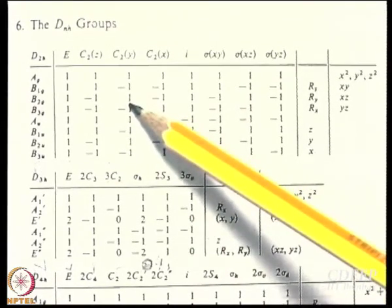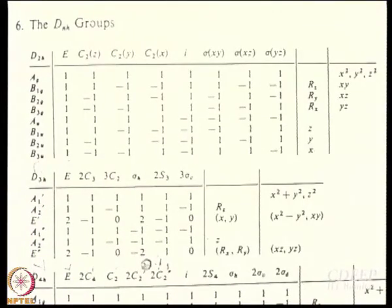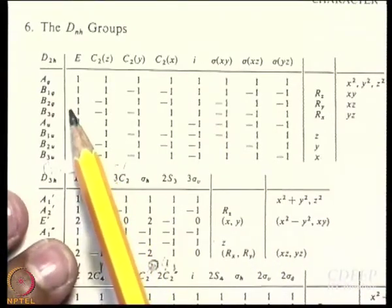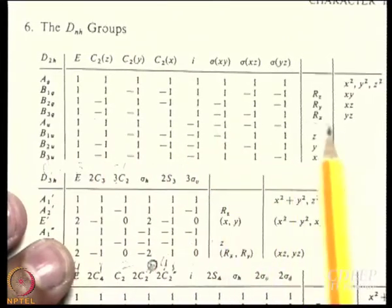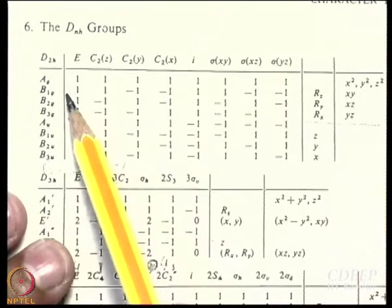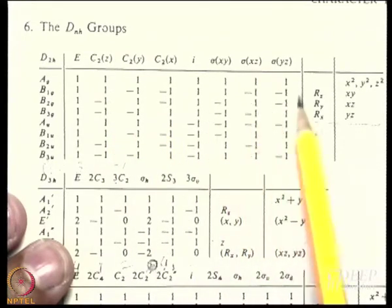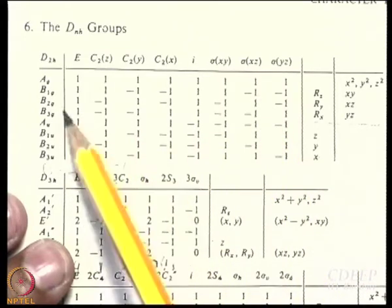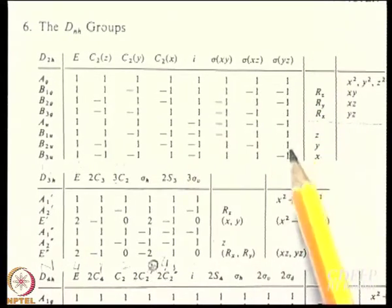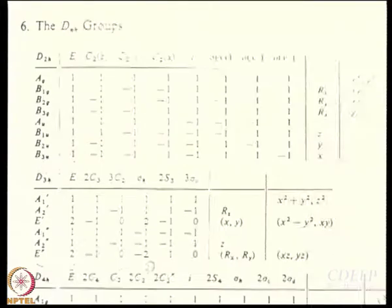For B1g, C2y is plus and C2x is minus 1. You go by the xz convention. Now what do we want to do? We need to use the projection operators. Let us use the projection operator of Ag. Ag is one of these irreducible representations. Projection operator of Ag on sigma 1 — what will happen? The characters are all 1 for Ag.